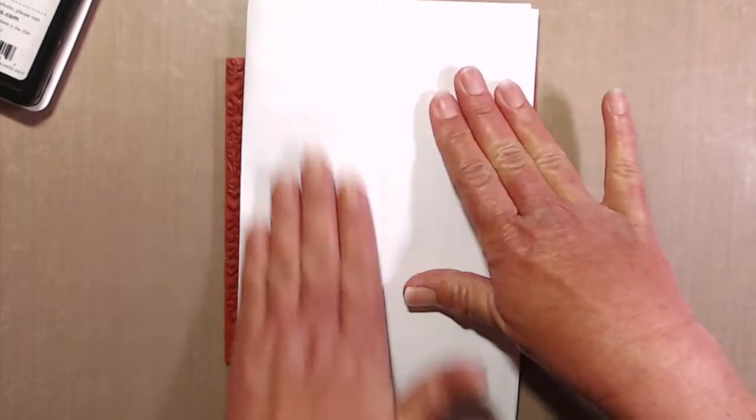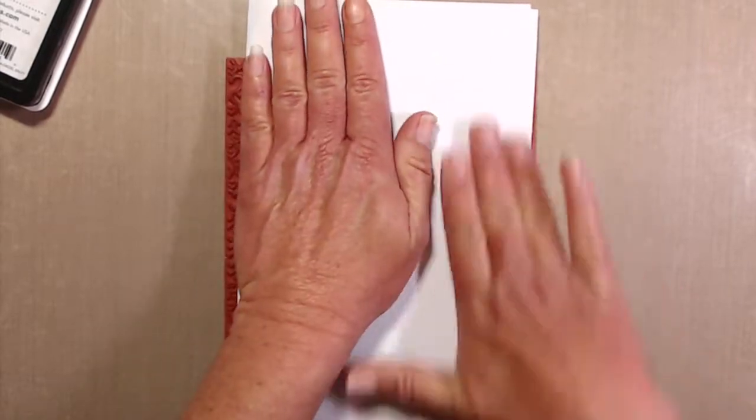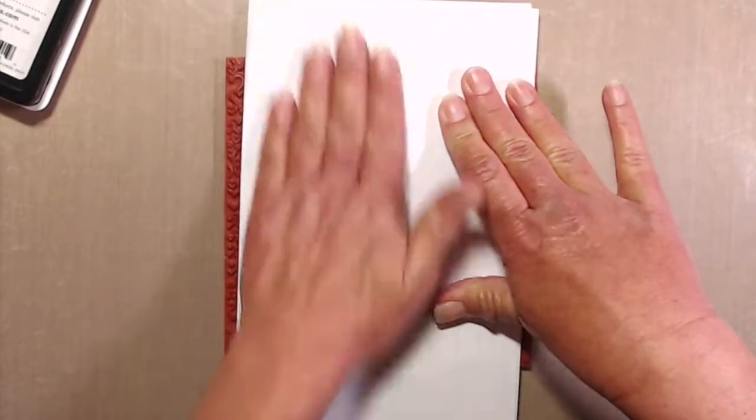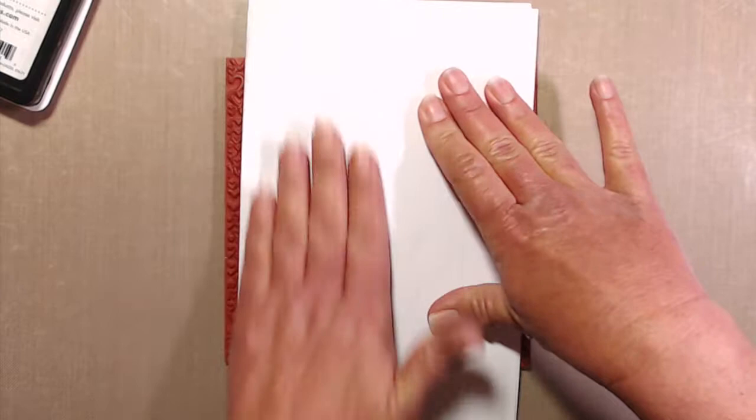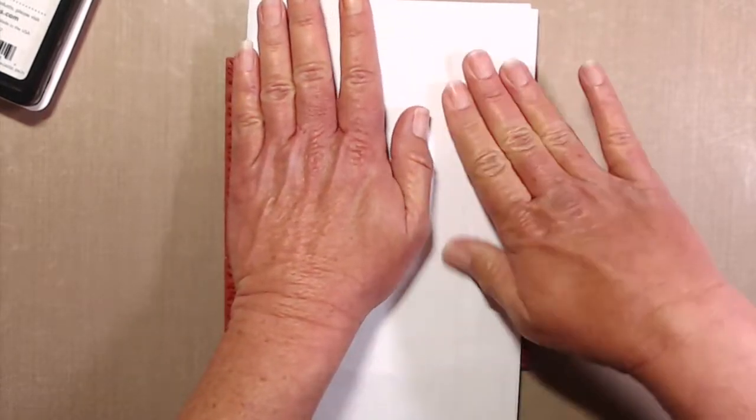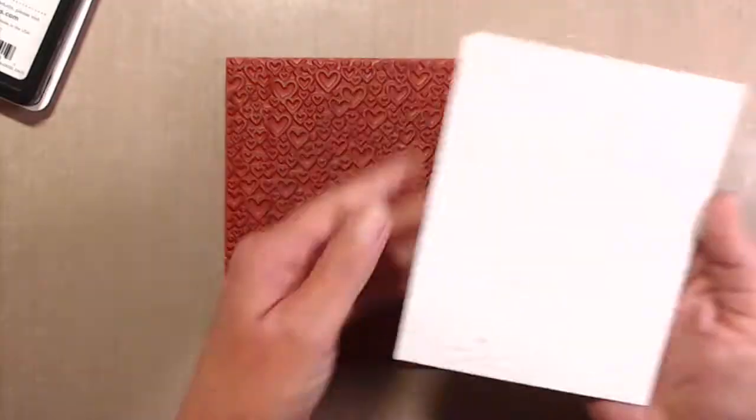To avoid getting ink all over my hands, I just placed a piece of scratch paper on top of my cardstock, which that cardstock is cut to four and a quarter by five and a half. But of course, I'm going to cut that down with my stitched rectangle dies because yes, I am still totally obsessed with those things.